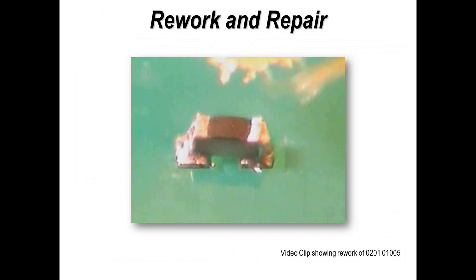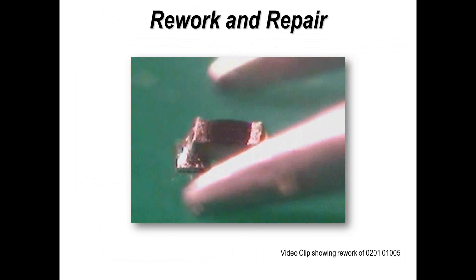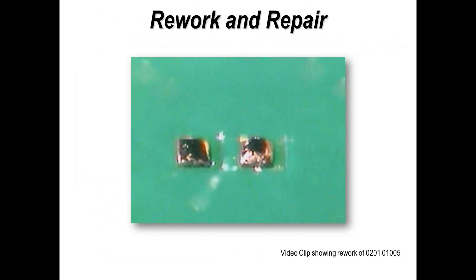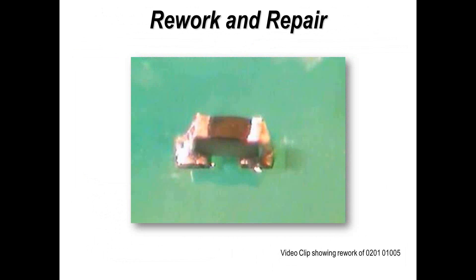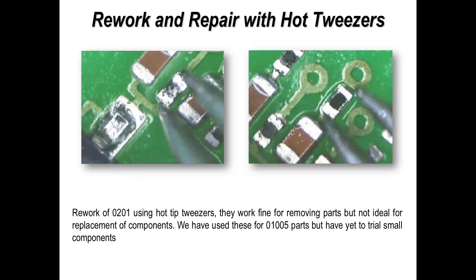Nitrogen or vapor phase works fine. In terms of rework, I've used standard rework techniques for the 0201 and 01005. You can use flux, a hot air pencil controlling the airflow, and a pair of tweezers to take them off and put them on again. It's fairly easy to do, but under magnification — a microscope is necessary. For 0201 and 01005 you can pick the parts with heated tweezers; I've used heated tweezers many times for both packages.